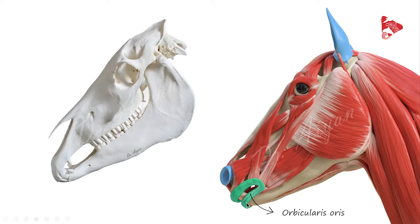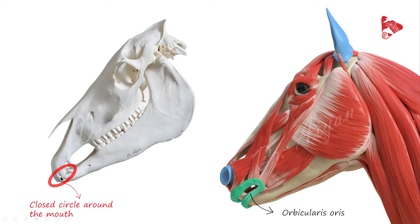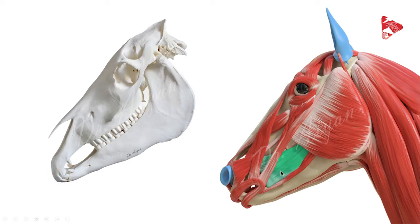This is the orbicularis oris, or in English the orbicular muscle of the mouth. As you can see in this animation, it forms a closed circle around the mouth, and its main function is to close the mouth opening. This muscle has no attachment to any of the bones of the skull.